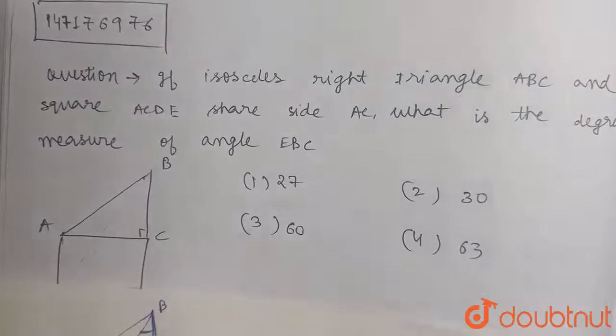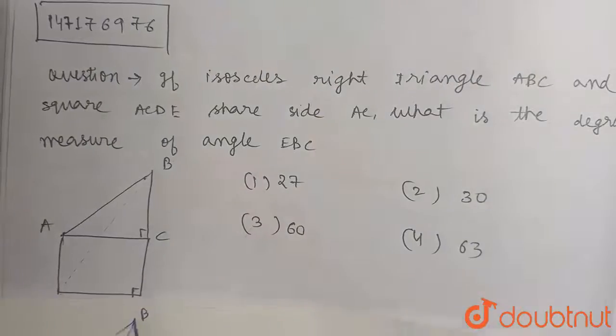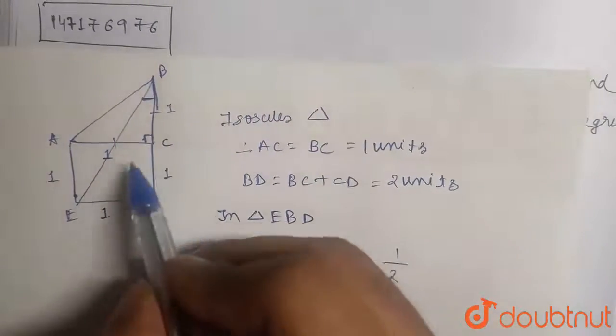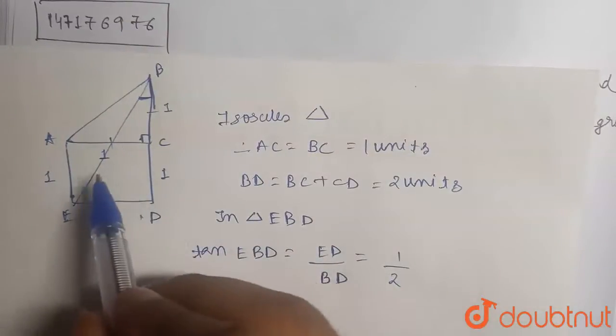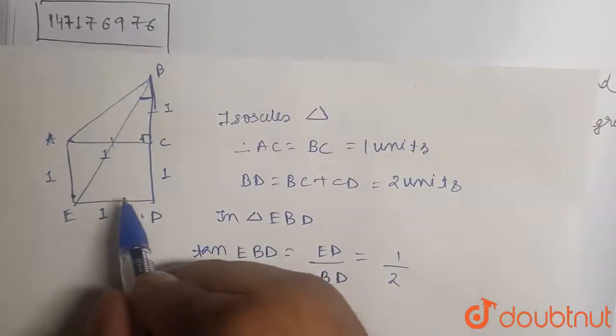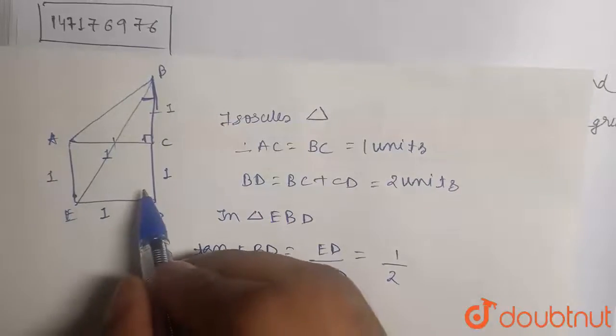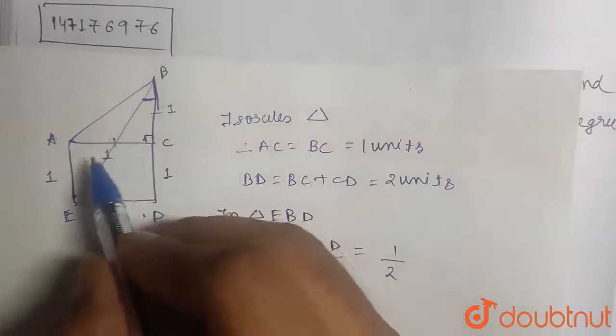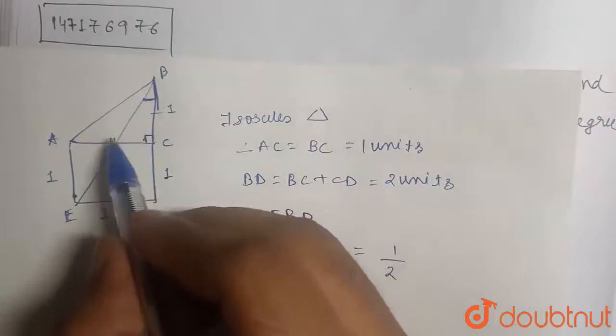So first, since all the lengths of the sides are equal, we assumed it to be one unit. And then the isosceles property tells us that these two side lengths must be equal. Because I assumed these two sides are equal, this is one, this is one, this is one, so I got the length of BD and ED.